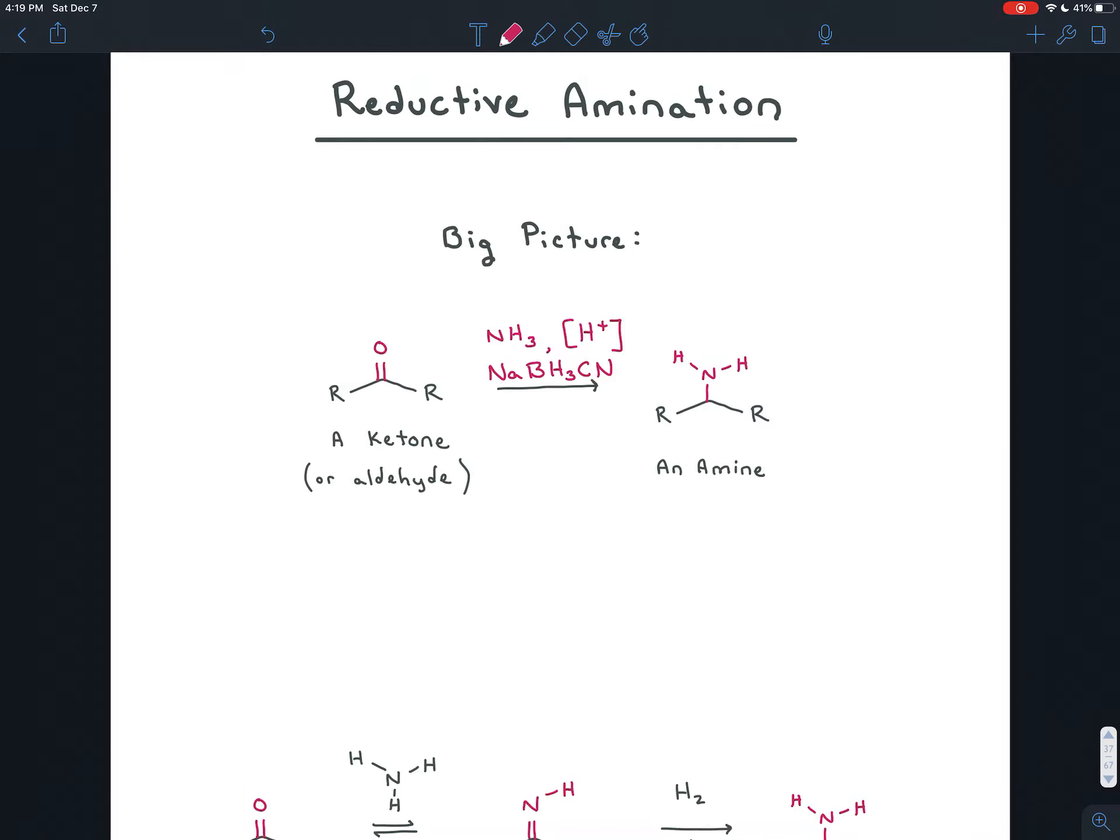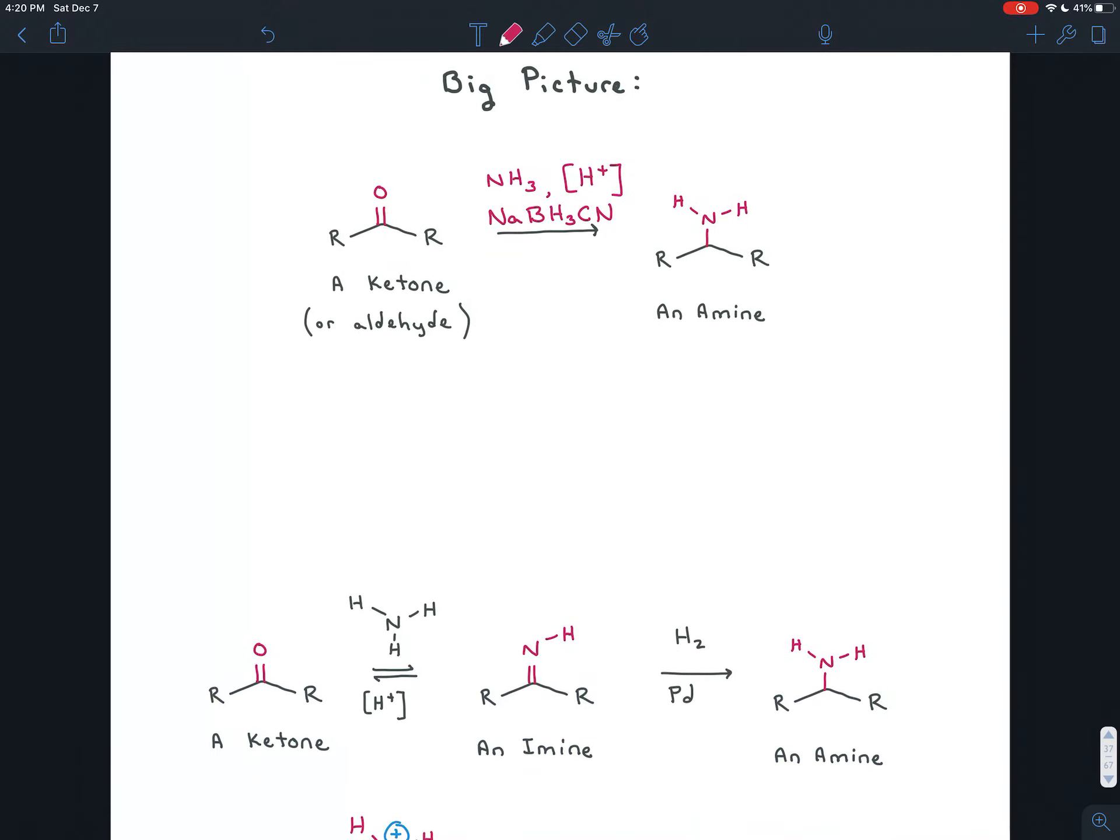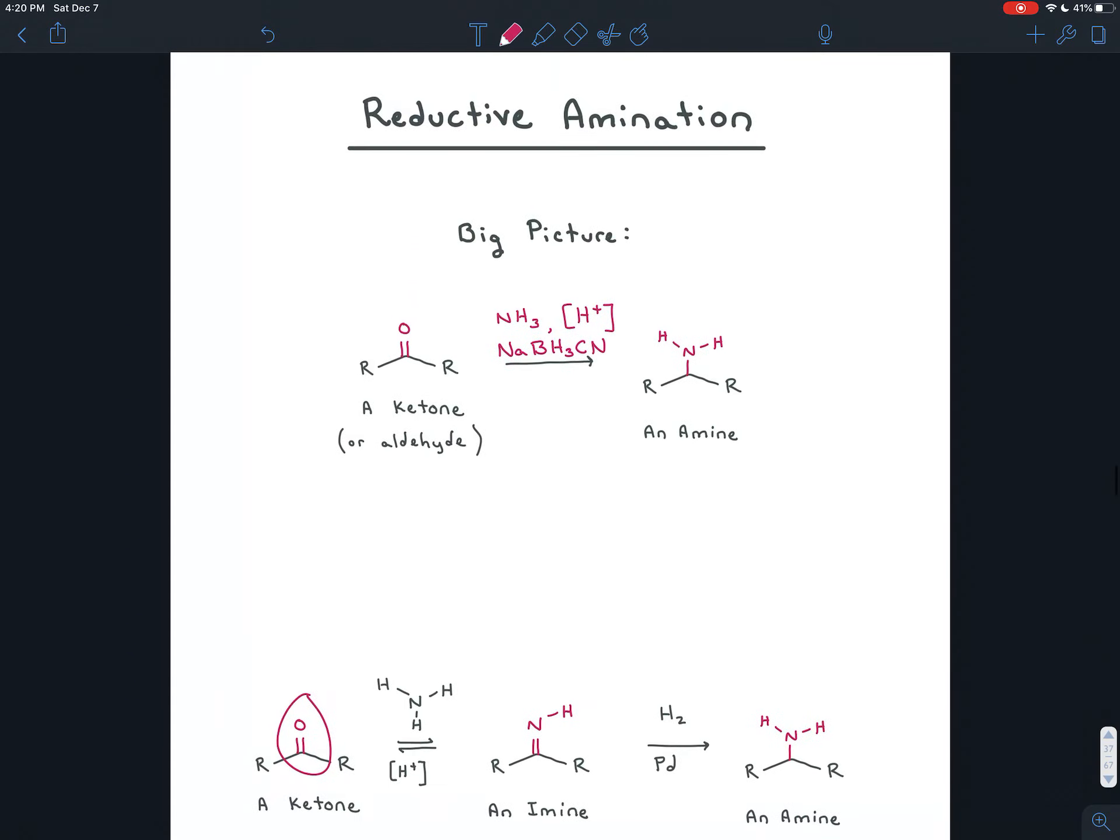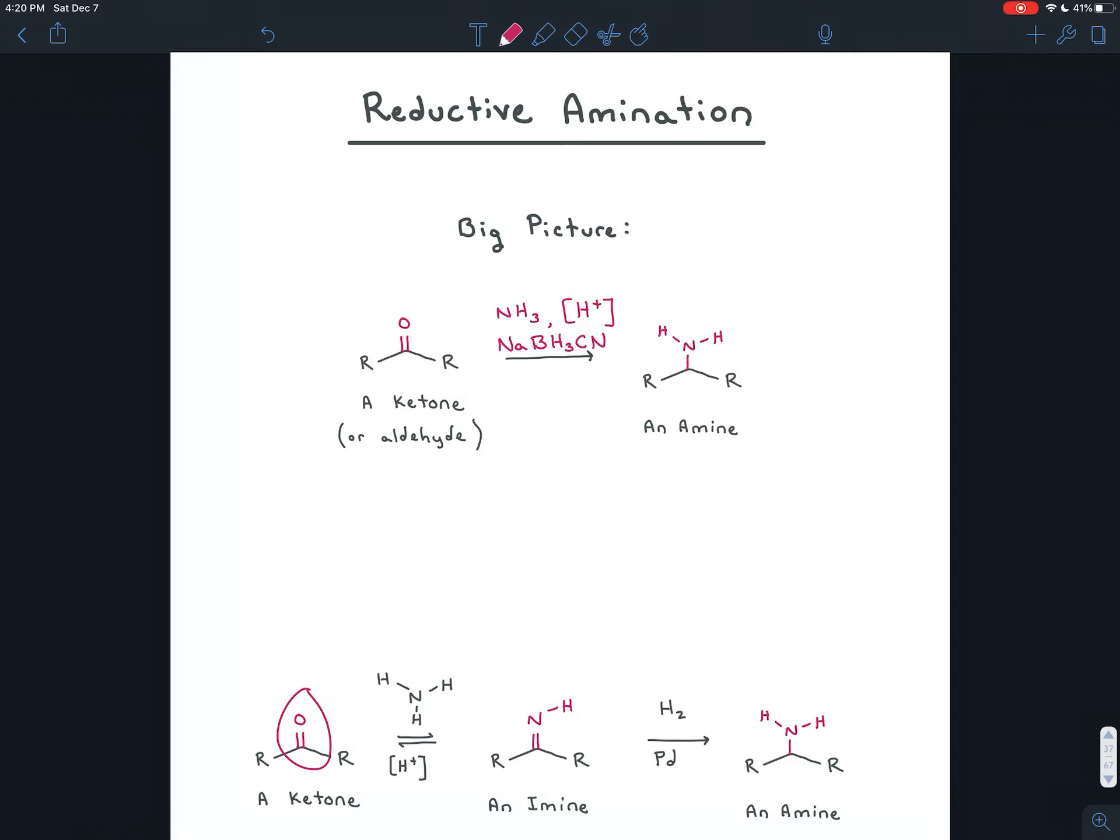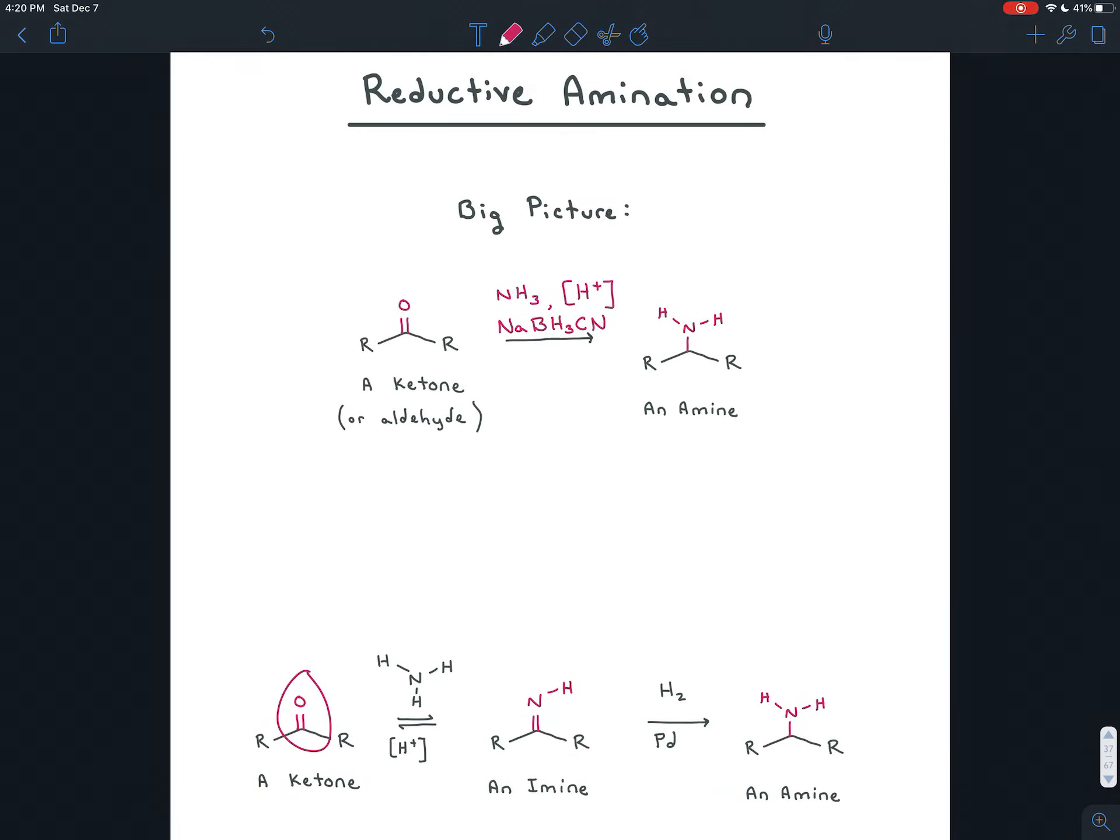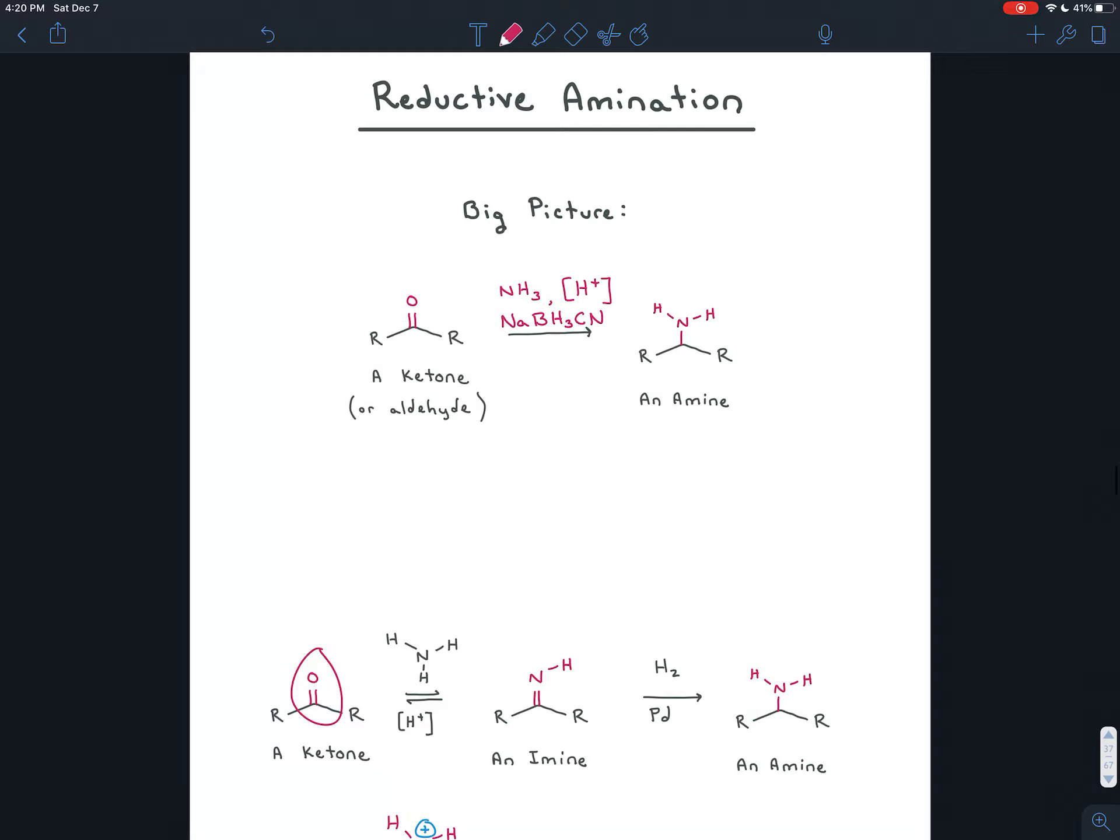So the big idea with these reductive aminations is that you're taking an aldehyde or a ketone. You're turning it into an imine by adding an amine and an acid catalyst, and then you're reducing that imine to an amine, preferably by using sodium cyanoborohydride. So it's this progression here. So that ultimately you're able to turn the aldehyde or ketone into an amine. Okay, so I'm going to leave this video for just a background concepts video. And in the next video we are going to work our way through some exercises that apply this recipe to specific amines that we want.